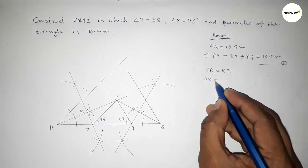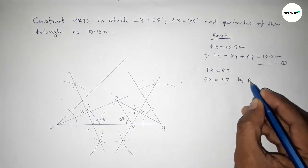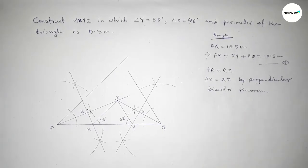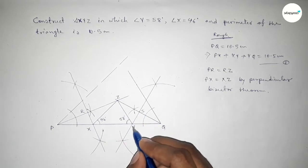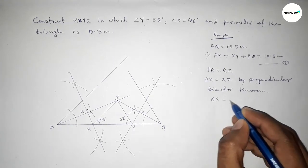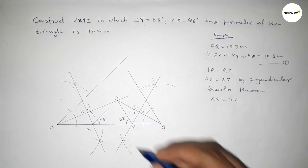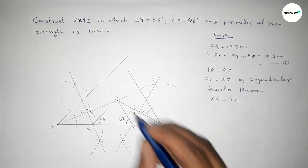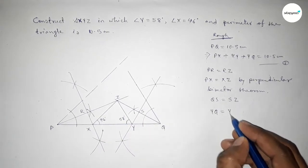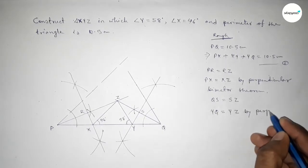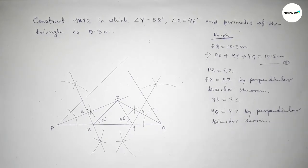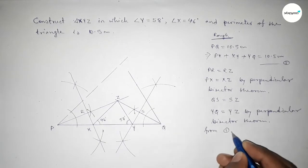By the perpendicular bisector theorem, the length PX equals XZ. Similarly, the line ZQ is bisected by the perpendicular line into two equal parts, so ZS equals SQ. Again by the perpendicular bisector theorem, the length YQ equals YZ.